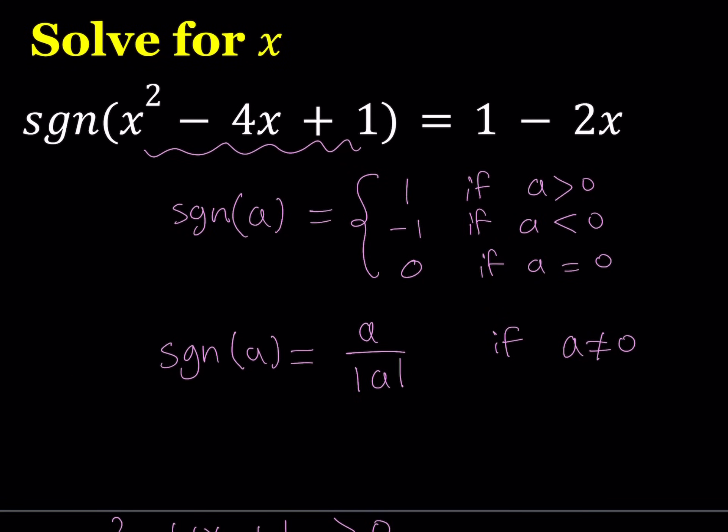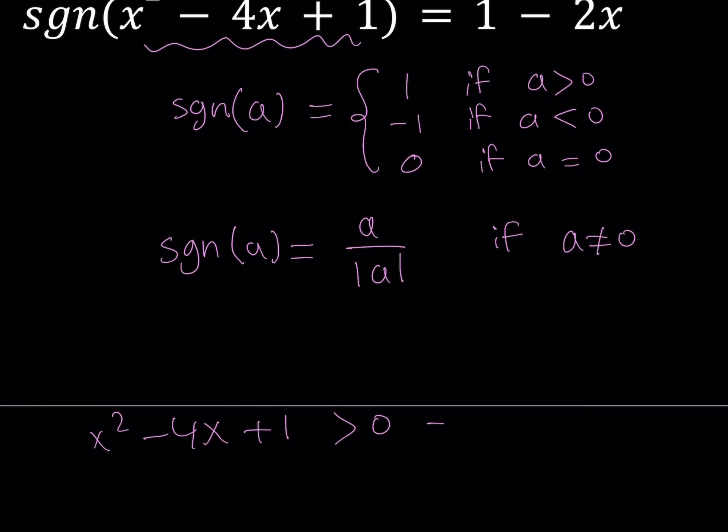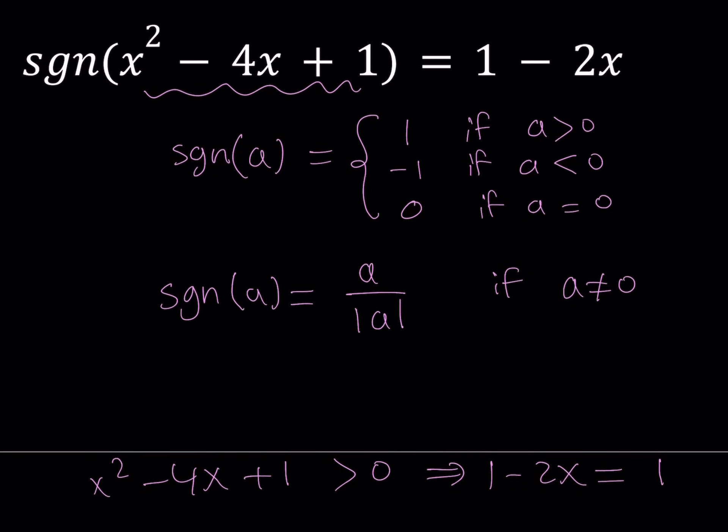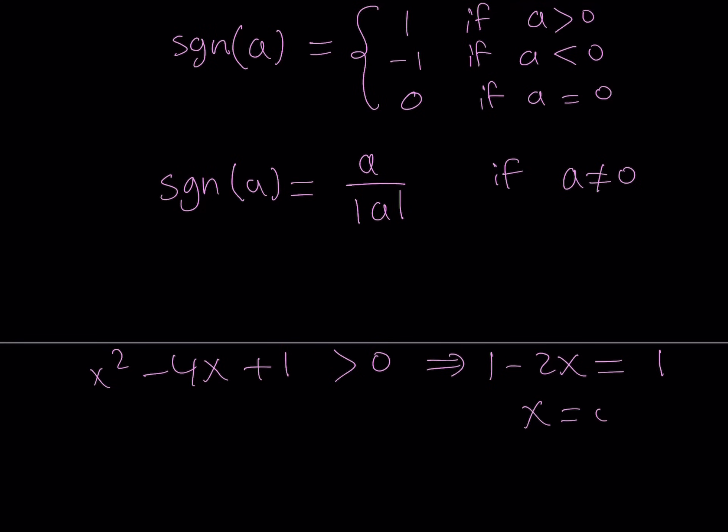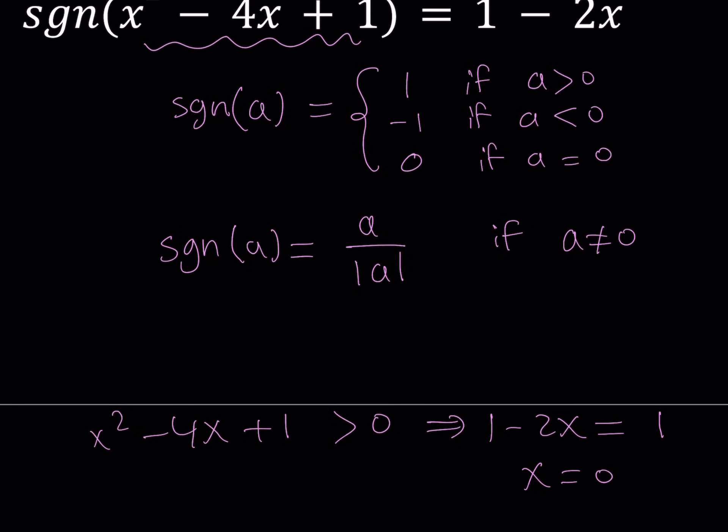If my expression inside the signum is positive, then the result is 1. So from here, this implies that 1 minus 2x is equal to 1, and that means that x is equal to 0. Now, here's one thing you can do. You don't have to solve this quadratic inequality, because the right-hand side gives you a numerical value, and you can just go ahead and plug it in and check the answer.